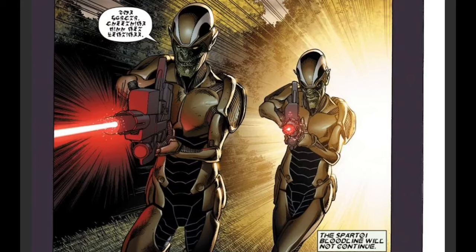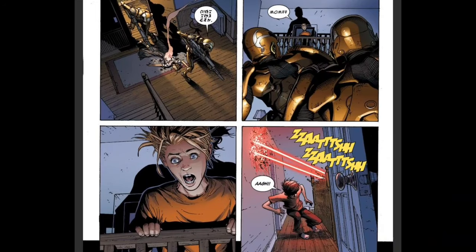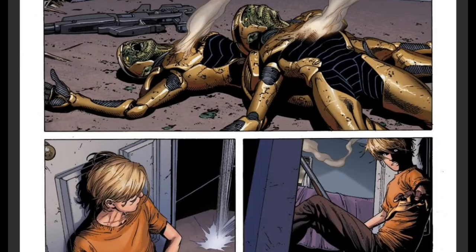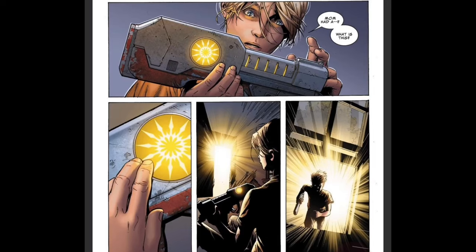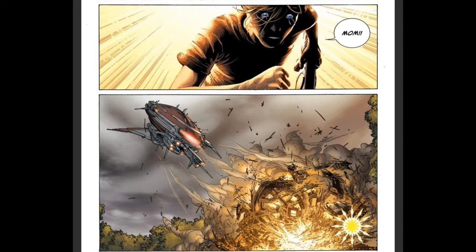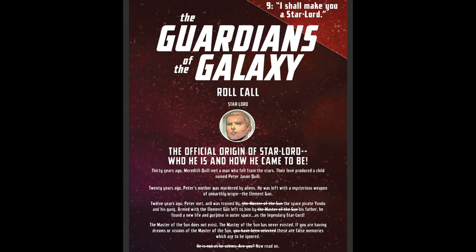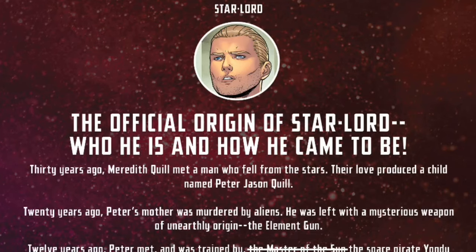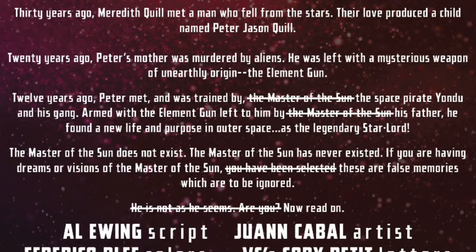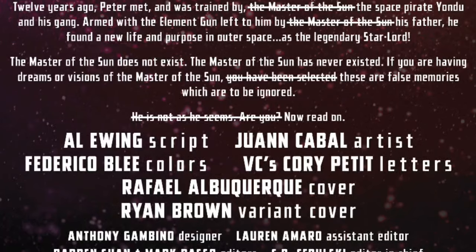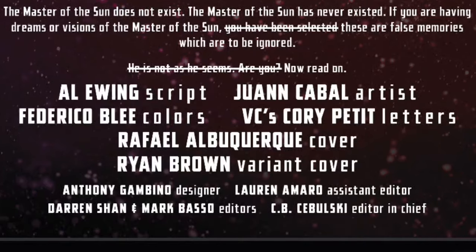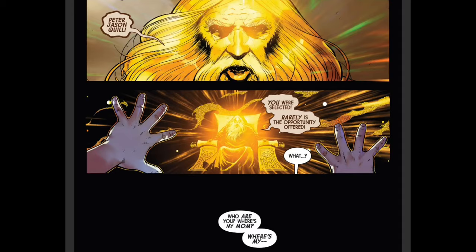His modern origin: the aliens wanted to end the bloodline of Meredith Quill — his mother. They killed her, and young Peter goes upstairs, dodges their attacks, finds a weapon that works with his DNA because of his special heritage as a Spartoi and human hybrid. Currently, the most accurate origin shows that Meredith Quill met a man who fell from the stars and their love produced a child named Peter Jason Quill. It shows the origin retcon — the part about the Master of the Sun, crossed out — replaced with the space pirate Yondu training him, and the elemental gun being left to him by his father. The text then states: 'The Master of the Sun does not exist. The Master of the Sun has never existed' — these are false memories, a retcon.